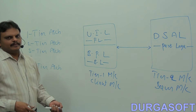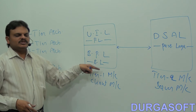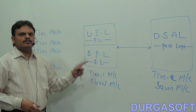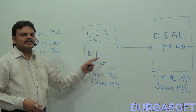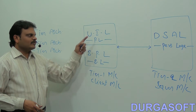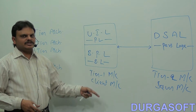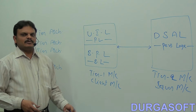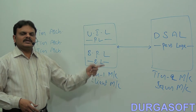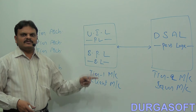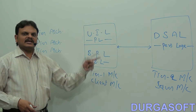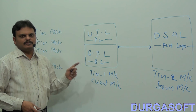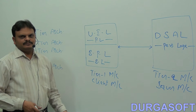Two-tier architecture is able to provide a multi-user environment. That means for more than one application, a single database server will be available. A single database server will provide services for more than one application.